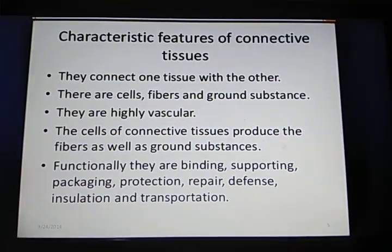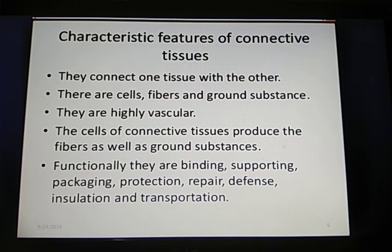The basic features of connective tissue: the name indicates it connects every part of the body. It is fibrous, containing cells with ground substances. It is highly vascular — blood cells are present. Functionally, connective tissues are binding and supporting tissues. They serve as packaging tissue like areolar tissue, protect the body, can repair like blood cells, provide defense against injuries, provide insulation, and help in transportation.